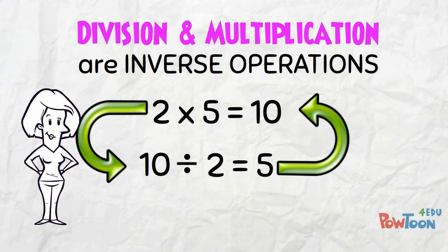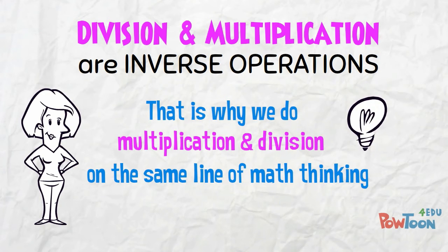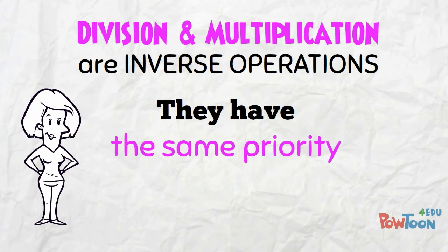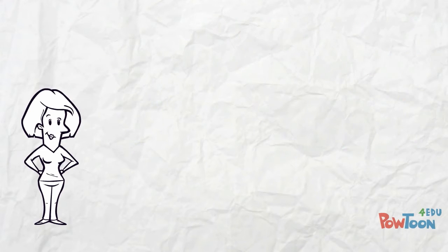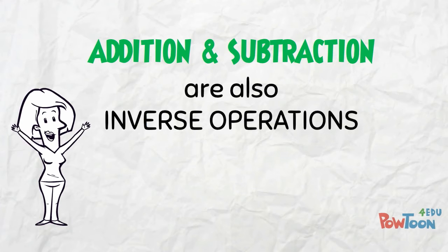We can use multiplication knowledge to get to a division answer, like I did here. That's why we do multiplication and division on the same line of math thinking when we do a BEDMAS problem. They have the same priority. And of course, it's the same for addition and subtraction too, because they are also inverse operations.